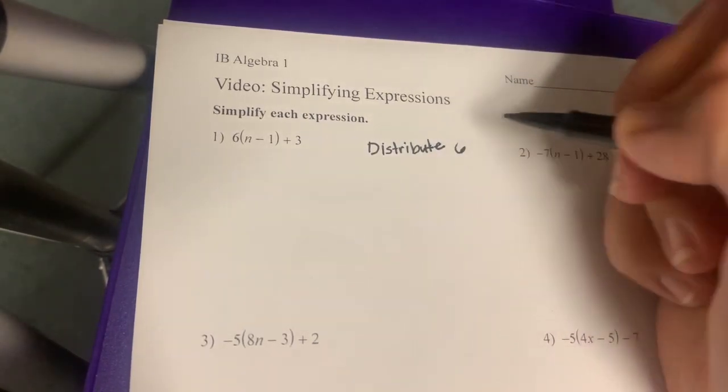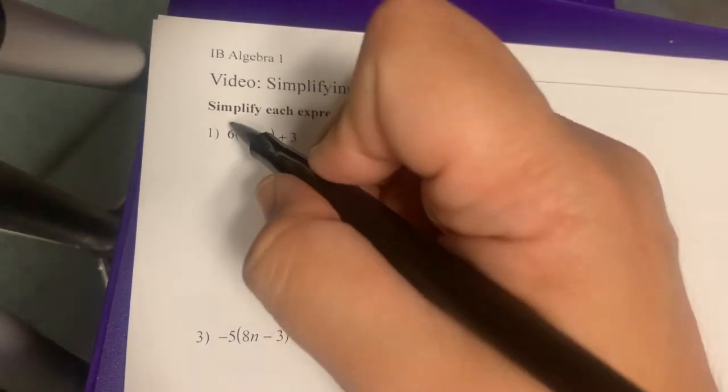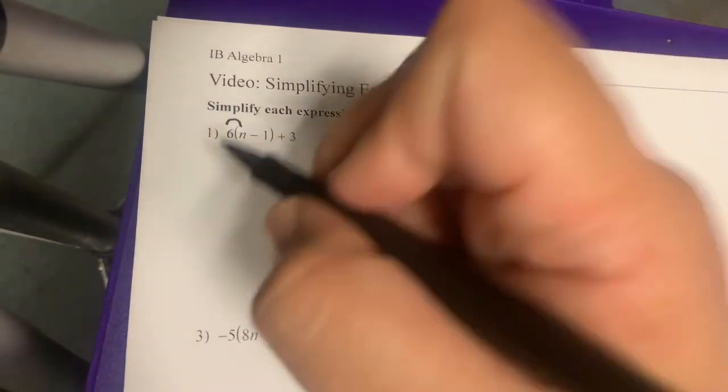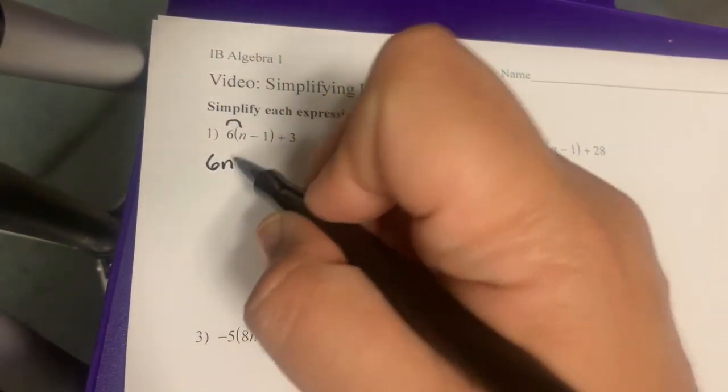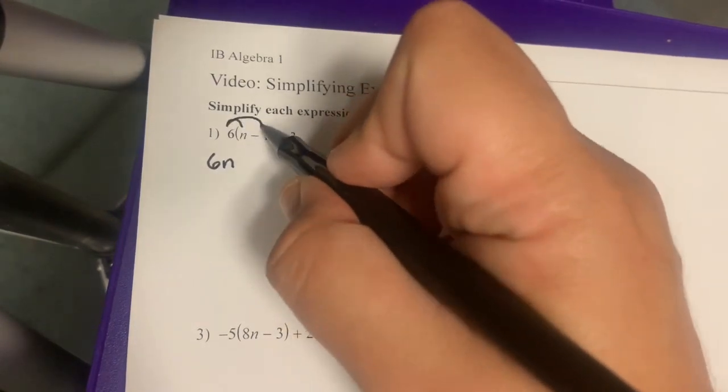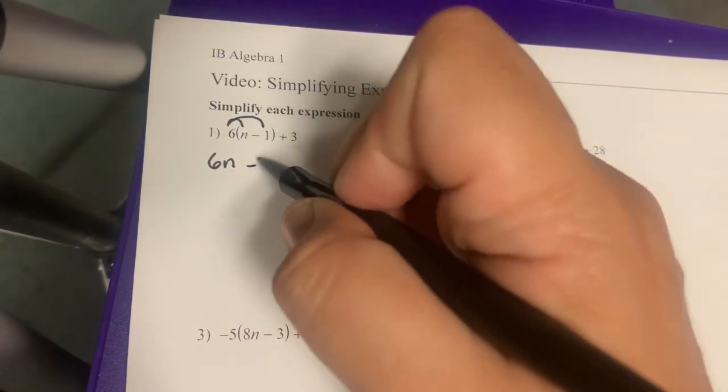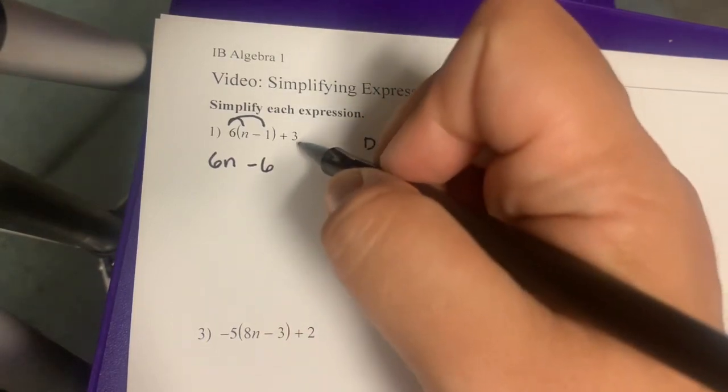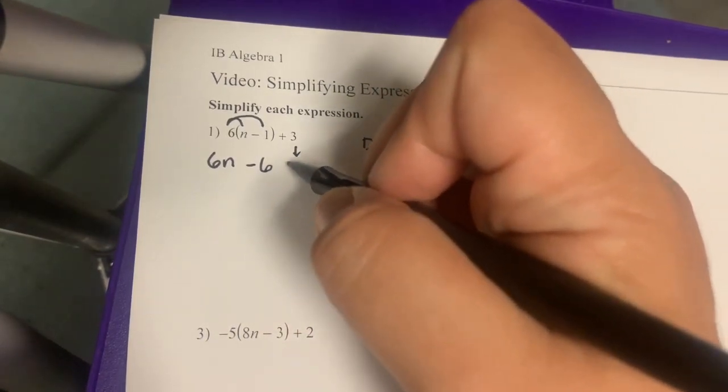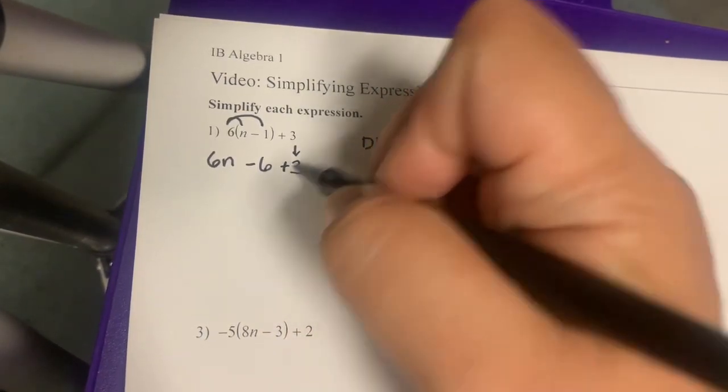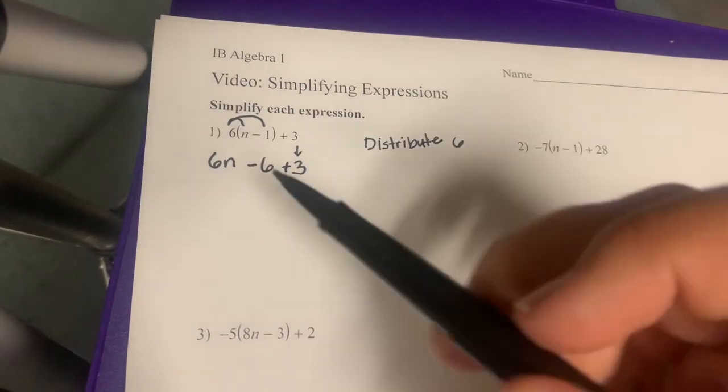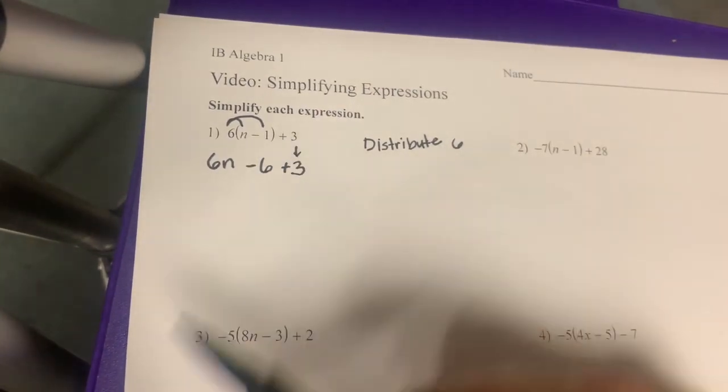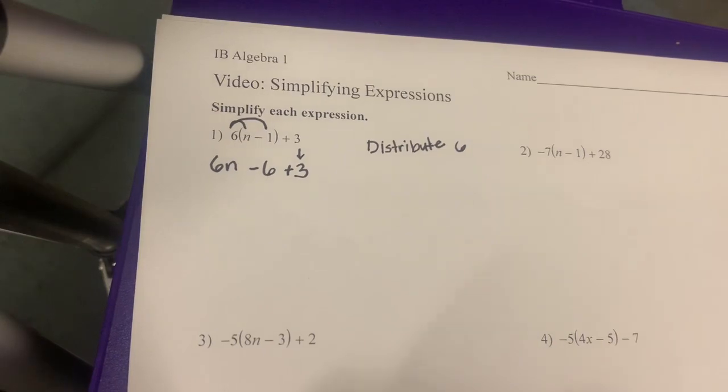We're going to distribute the 6. That means we're going to do 6 times n, which gives us 6n. We're going to do 6 times negative 1, and we're going to get negative 6. And we're going to bring down this positive 3 because we didn't do anything with that. We only multiply the 6 times each of the things in the parentheses.